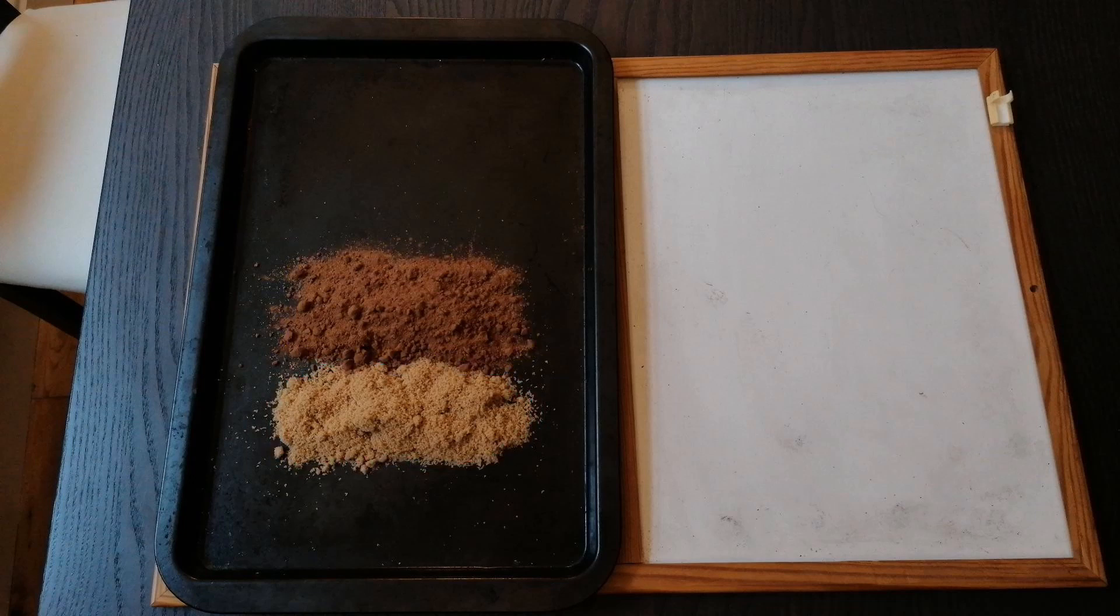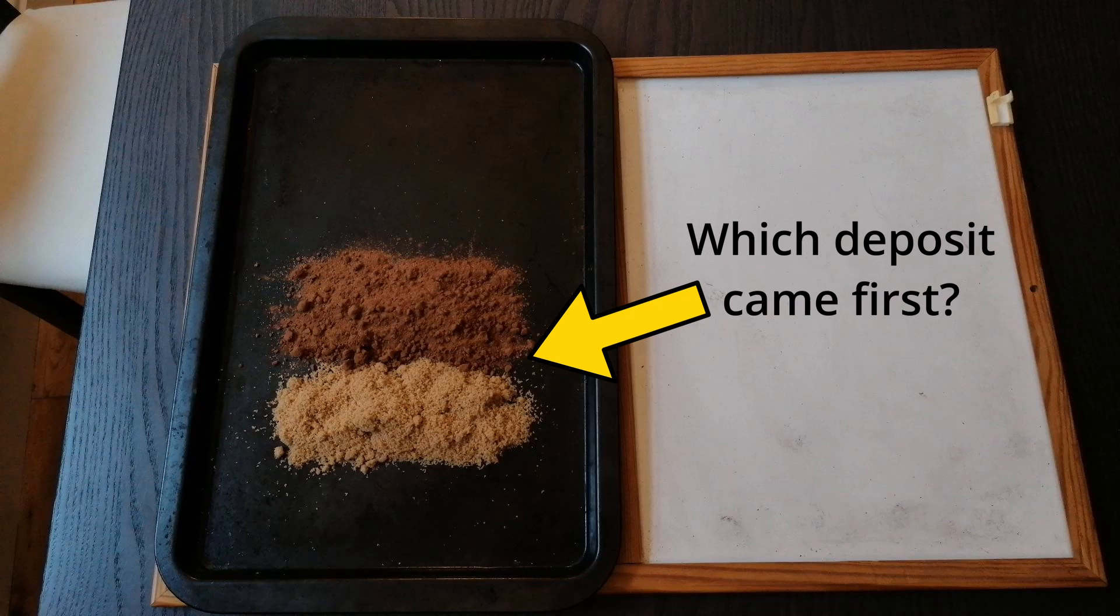This grouping also applies to when something has been removed, such as when a pit has been cut into the ground and the soil has been removed. Each context we find essentially represents an event in time, and it's our job as archaeologists to identify these events and arrange them in the correct chronological order.